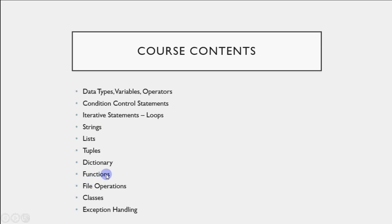Then we have functions. Functions are present in every language. The basic meaning of a function is a block of code which is capable of doing a meaningful task. You write one block and you can use it anywhere, as many times as you want. So reusability of code is the main motive of having functions in a language. Then we have file operations and file handling — when you want to permanently store something in a file or read from it, that all comes under file operations.